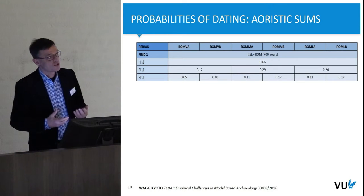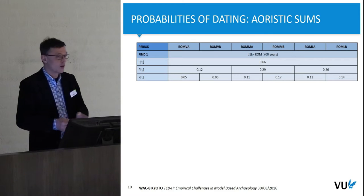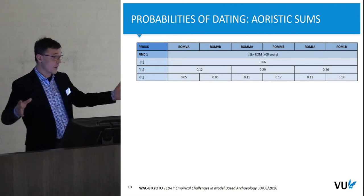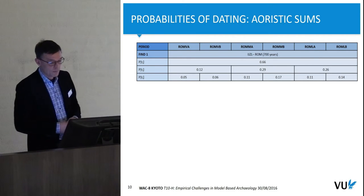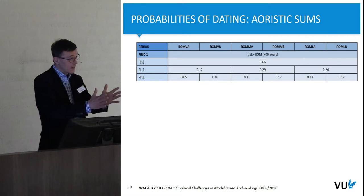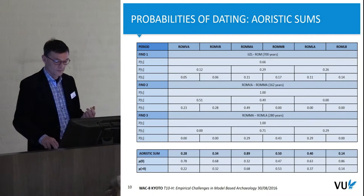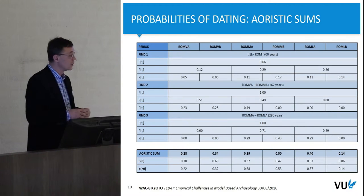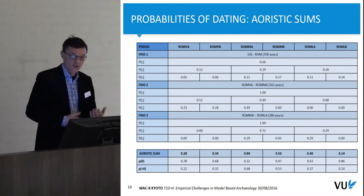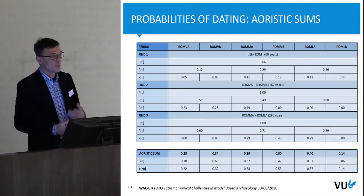One way to deal with this — published by Enrico Crema in 2012 — is to try to divide the probability of dating over the periods considered. So if you have a find dated anywhere between the Iron Age and the Roman period — a total time span of 700 years — you could say the probability of this belonging to the Middle Roman B period is only 17%, and the probability of it belonging to the Early Roman A period is only 5%, because that period's time span is much shorter. By adding these probabilities together for multiple finds, you end up with what is called the aoristic sum. You can then say: the probability that none of these finds comes from the Early Roman A period is 78%, dropping to 32% for the Middle Roman A period.